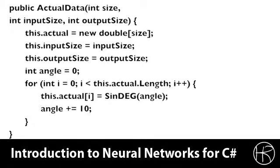We begin with the constructor. It accepts three parameters. The first is the size of the actual data that we're producing and then it needs to know the input and the output size for the neural network. The input size is the number of elements that we're using to predict. The output size is the number that we're actually predicting. First we create an array that holds the actual data that we're going to produce according to the size.